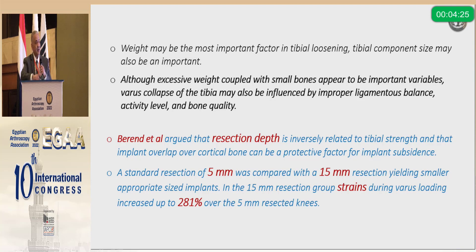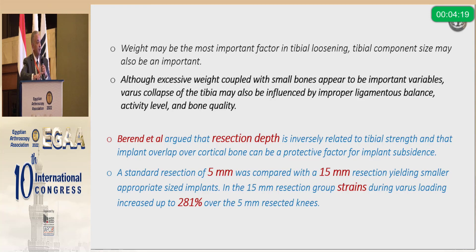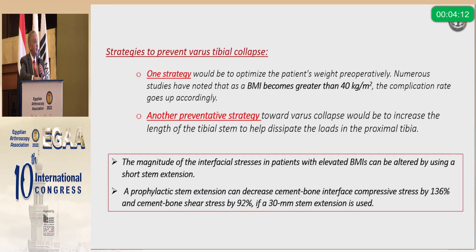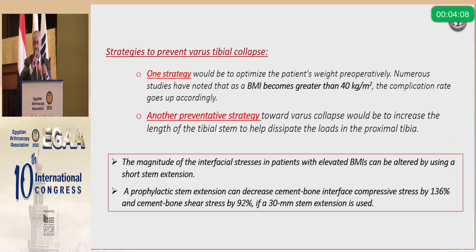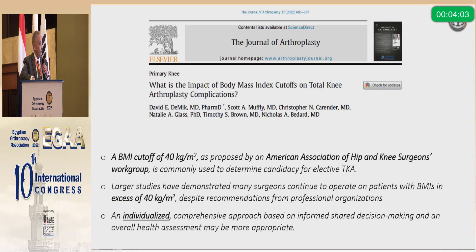Increasing the depth of resection decreases bone quality and decreases the tray support. Comparing a 5mm resection with a 15mm resection, the strain will increase more than 280% over the tibial component. Therefore, there are two strategies: either reduce the patient's weight or use the addition of a stem extension.